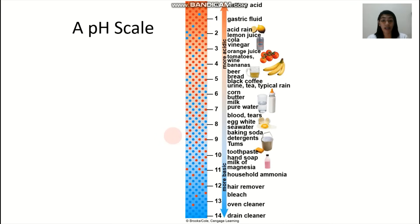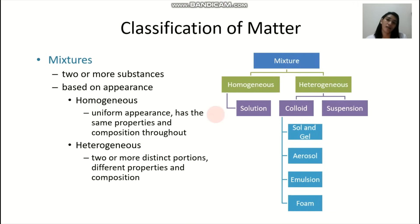Now this is a pH scale. It would tell you the acidity and alkalinity of your compounds. So yung examples. You have your battery acid, gastric fluid, acid rain, etc. So 7, the pH 7 is actually the neutral pH. We have here pure water.